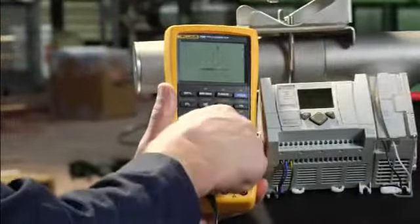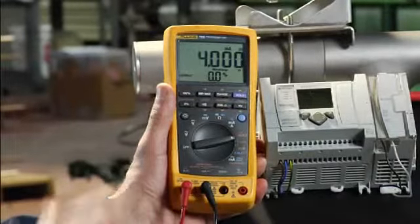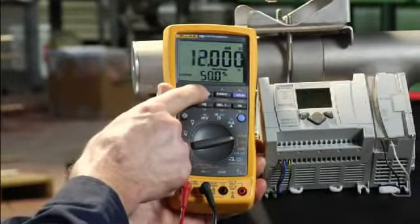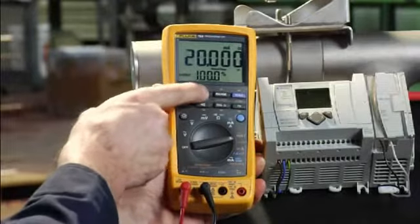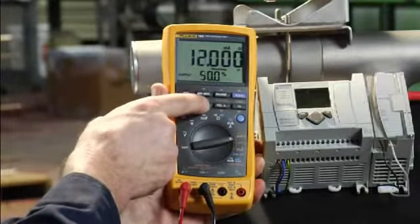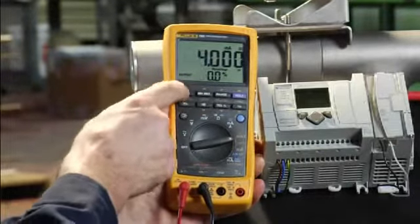In the milliamp function, the built-in loop calibrator sources a 4 to 20 milliamp signal to test devices with a 4 to 20 milliamp input such as PLC I/O or analog milliamp indicators.